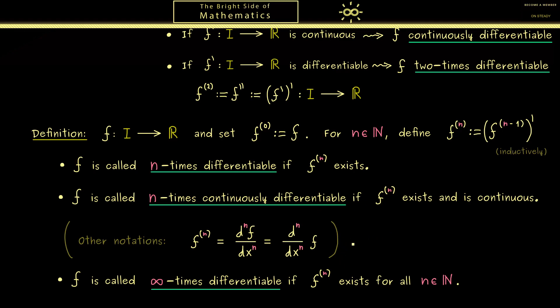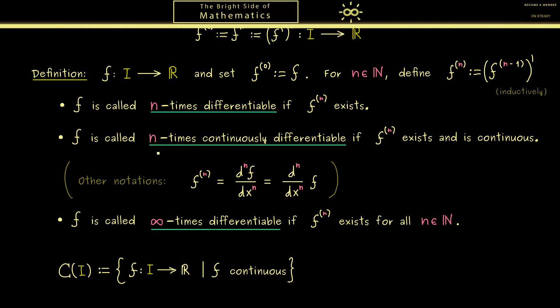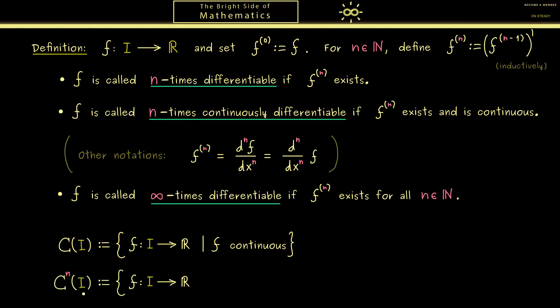In the next step I can introduce you to some important notations for sets of functions. Indeed in analysis we often have a capital C with a domain I. And this represents the set of all functions f defined on the interval I with the property that f is a continuous function. Now it's not so surprising that we also have a C with an upper index n. And this one should include all n times continuously differentiable functions. So we write C to the power n of I which contains all the functions f with the property that f is n times continuously differentiable.